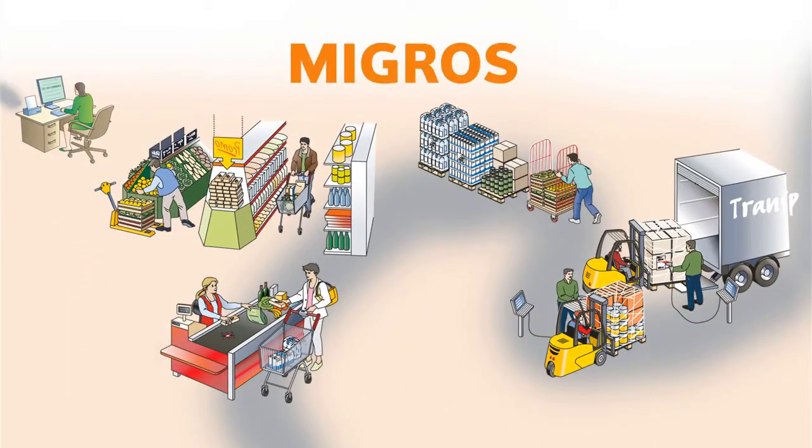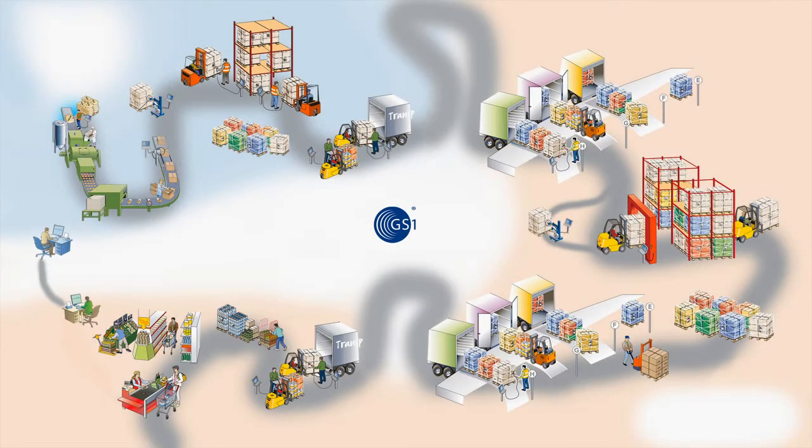The store receives the goods and unpacks them onto the shelves, ready for the customer to buy. At each step of the process, there is a checkpoint where the SSCC has to be scanned. The individual identification of logistic units with an SSCC enables trading partners to improve and simplify a number of processes. This applies to the entire supply chain, from the receiving of goods to storage, track and tracing, and recalls of products.